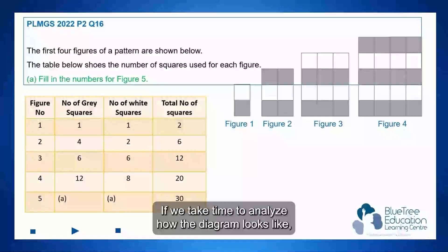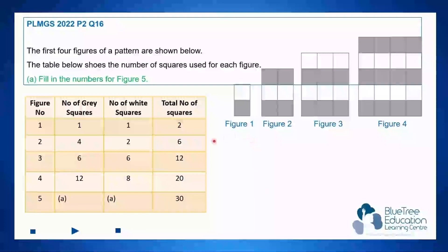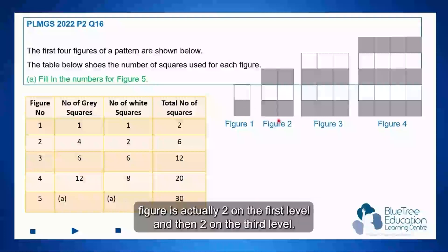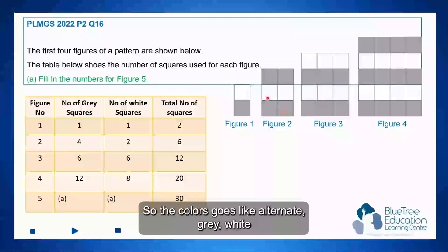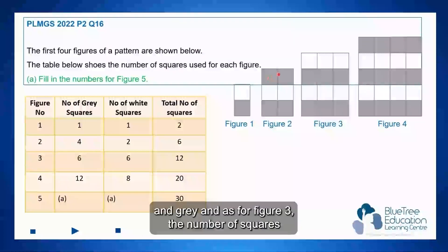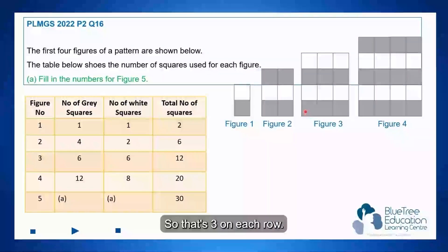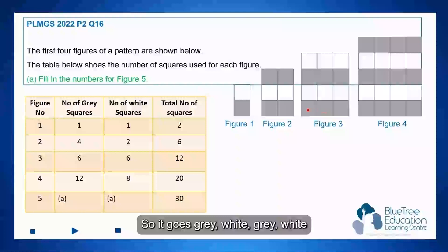If we take time to analyse how the diagram looks like, the number of grey squares for the first figure is 1, and for the second figure there are 2 on the first level and then 2 on the third level. So the colours go like alternate grey, white, and grey.